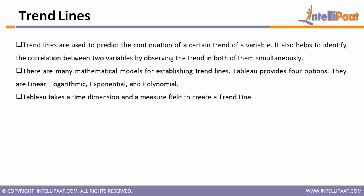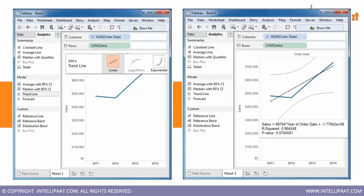Next, trend lines. Trend lines are used to predict the continuation of a certain trend of a variable. They mainly help you analyze the trend and the dependency between variables — identifying the correlation between two variables by observing a trend in both simultaneously. In Tableau, there are many mathematical models associated with trend lines: linear, logarithmic, exponential, and polynomial. Based on the requirement, we choose any of these models.